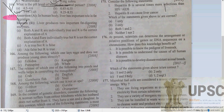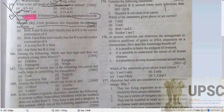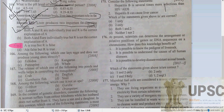Question 165 — assertion-reason: The liver produces two important fat-digesting enzymes. In the human body, the liver has an important role in fat digestion — absolutely correct. Bile juice plays a very good role in fat digestion. The liver is the largest and most complex organ, and its function in fat digestion is significant. The fat-digesting enzymes are lipase and bile salts.